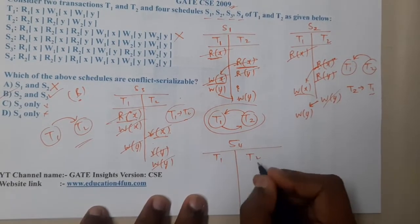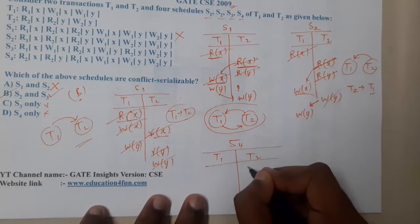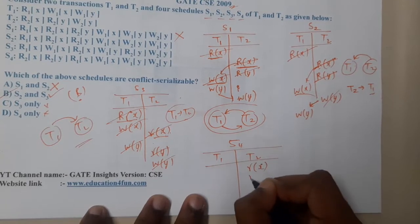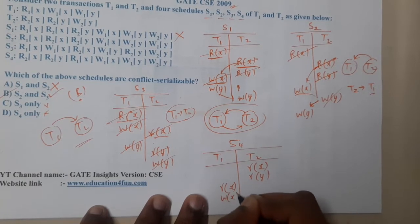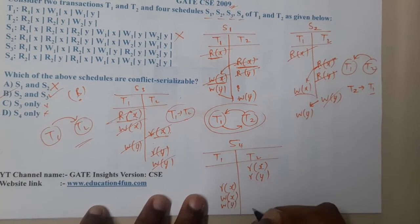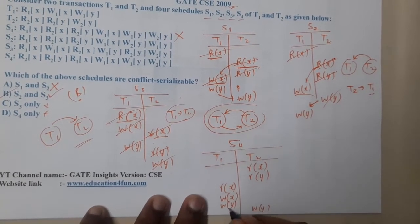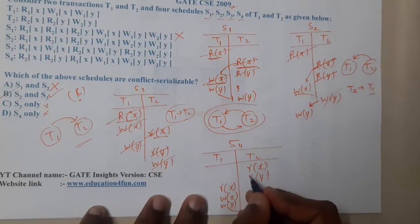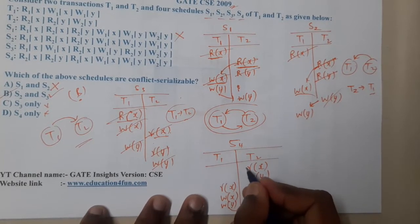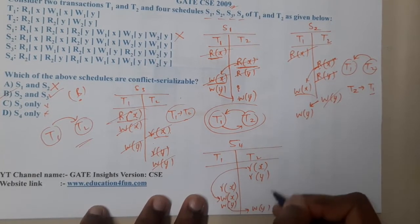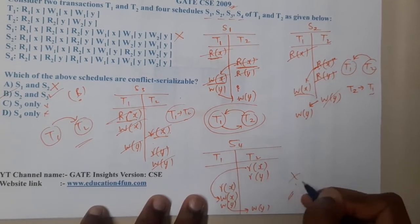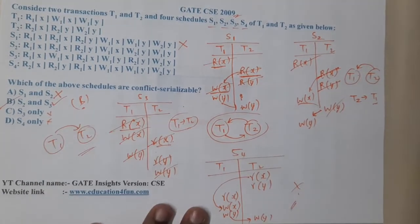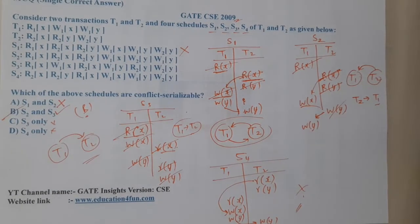For S4, the operations include Read(X), Read(Y), Read(X), Write(X), Write(Y), Write(Y). An issue is found between the transactions, and Read(X) with Write(X) creates a conflict in the opposite direction, forming a cycle indirectly. Therefore S4 is not conflict serializable.